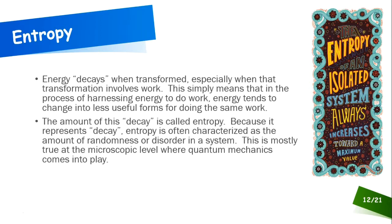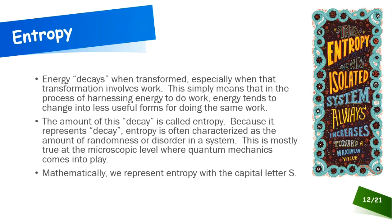A lot of entropy occurs at the sub-microscopic level where quantum mechanics plays in. But if you think of entropy as the amount of randomness or disorder in a system, you'll be all right. The amount of entropy always increases as nature takes its natural path. Traveling that path — from one equilibrium state to another — increases the total disorder not just in the system but in the universe. Mathematically, we represent entropy with the capital letter S.